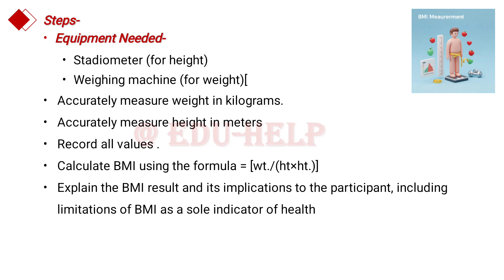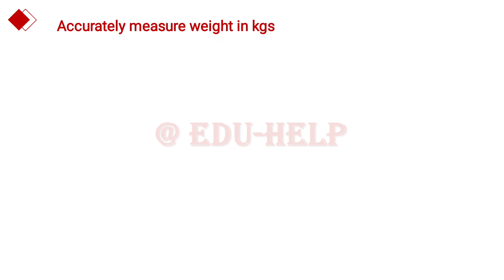Steps to perform BMI measurement require certain equipment: a stadiometer for height measurement and a weighing machine for weight measurement. Students should accurately measure weight in kilograms and height in meters, record all values, and calculate BMI using the formula weight divided by height squared. Finally, they should explain the BMI results and their implications to participants, including the limitations of BMI as a sole indicator of health.